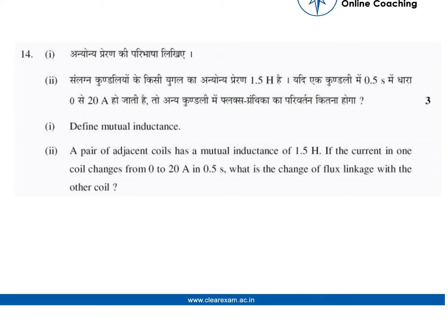Define mutual inductance. A pair of adjacent coils has a mutual inductance of 1.5 henry. If the current in one coil changes from 0 to 20 ampere in 0.5 second, what is the change of flux linkage with the other coil? So first of all, I will define the mutual inductance.